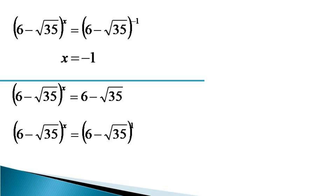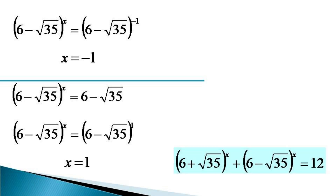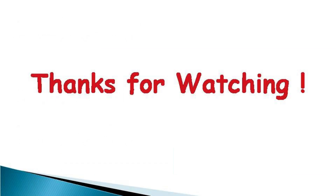When these values are verified with the original equation, it can be seen that both x = −1 and x = 1 satisfy the given equation. Hence both these values are the solutions of the given equation. Thanks for watching.